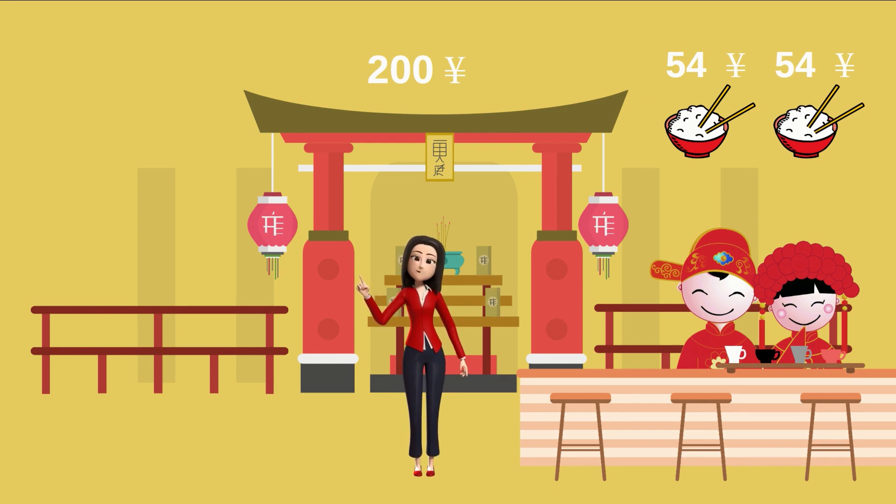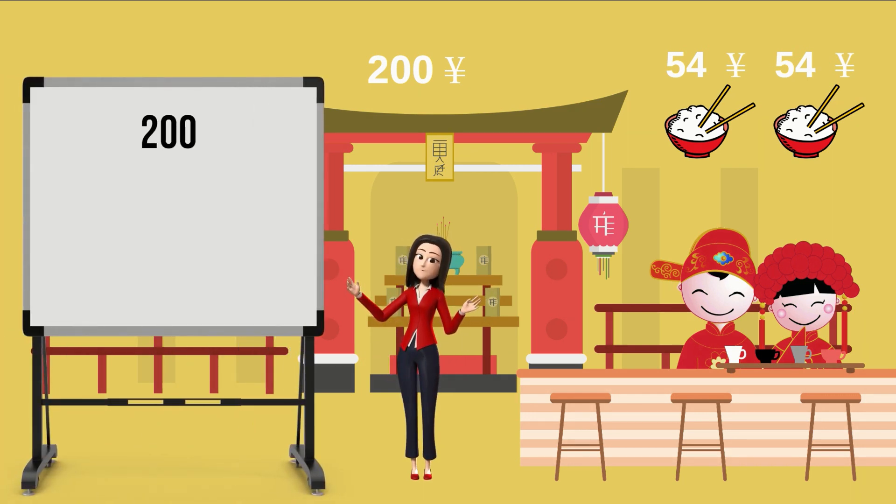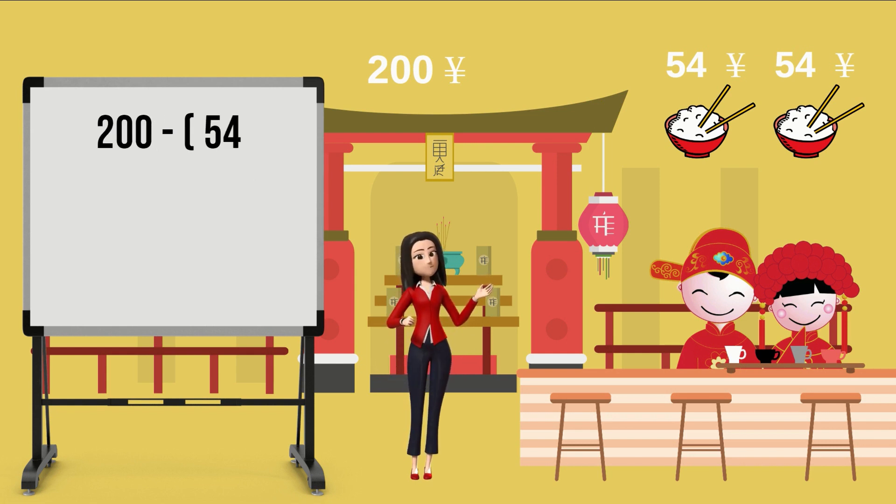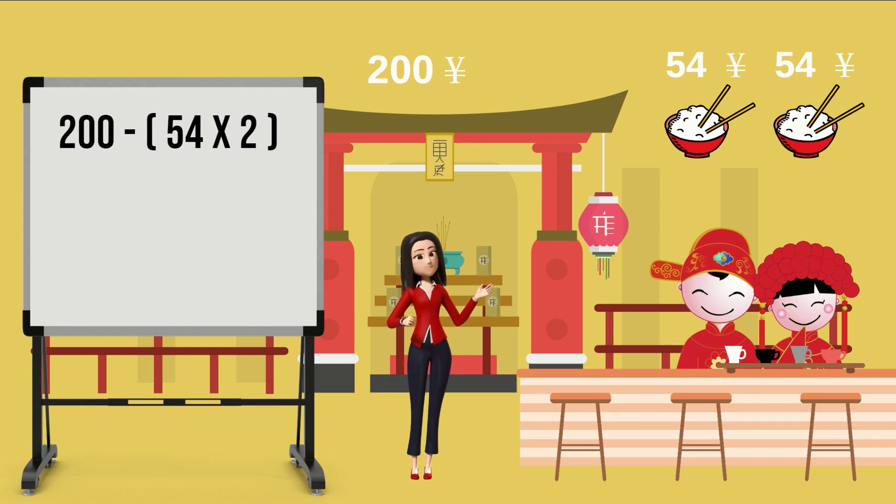Let's write and evaluate the numerical expression to match what happened. So here are my 200 yen, and two bowls of fried rice means 54 two times. It will be like 200 minus 54 multiplied by 2.